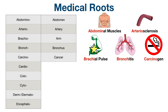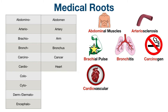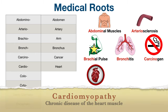Moving on to carcino, which means cancer — you can use the word carcinogen, which is a substance capable of causing cancer, and this will help you remember that the root carcino refers to cancer. Next is cardio, which is an easy one to remember. Cardio means heart. An example medical term is cardiovascular, which relates to the heart and blood vessels, or cardiomyopathy, which is a chronic disease of the heart muscle.